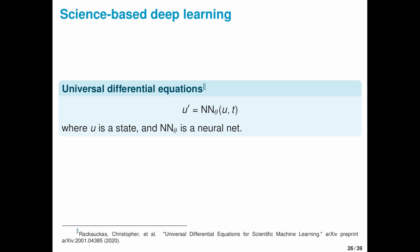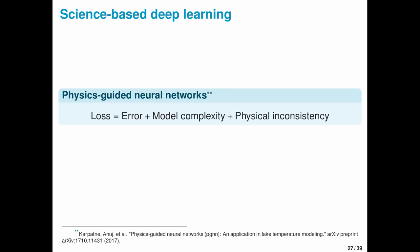Another interesting example is provided by physics-guided neural networks. The thing that I think is interesting here is the loss function consists of three terms. The first is an error term that measures the discrepancy between observed data and model predictions. The second is a penalty for model complexity.